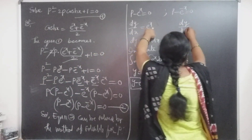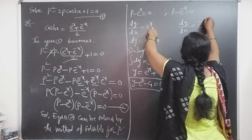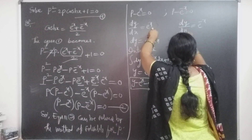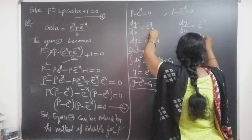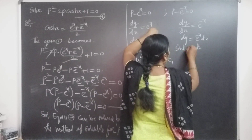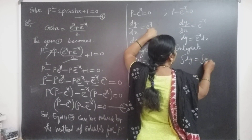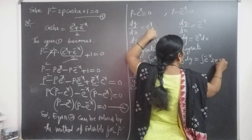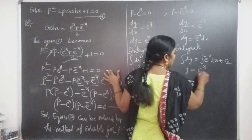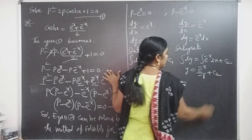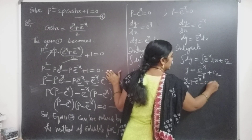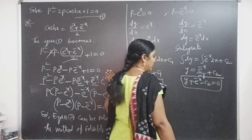The second factor gives: dy/dx = e⁻ˣ. Separating variables: dy = e⁻ˣ dx. Integrating both sides: y = e⁻ˣ / (-1) + c₂. Therefore: y + e⁻ˣ - c₂ = 0 is the solution of the second factor.